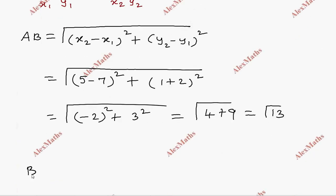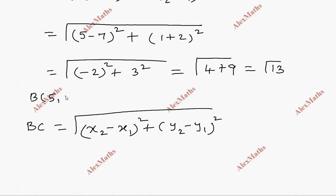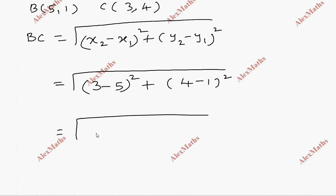Now, we have BC. Once again, root of x2 minus x1 whole square plus y2 minus y1 whole square. B is 5 comma 1, C is 3 comma 4. Root of 3 minus 5 whole square plus 4 minus 1 whole square. This is root of minus 2 whole square plus 3 square, which is root of 4 plus 9, root 13.